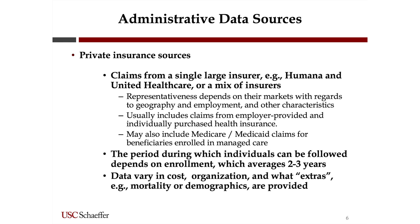Private claims are usually employer-provided insurance, some individually purchased health insurance, and may also include Medicare or Medicaid claims if beneficiaries from those programs are enrolled in managed care. The period you can follow people really varies — it depends on how long they stayed insured with the same insurer. On average you see about two or three years, some people for 15 years, some for one year. The data themselves vary in what they cost to get, and usually it's quite pricey — roughly a quarter million dollars.